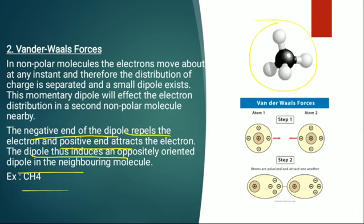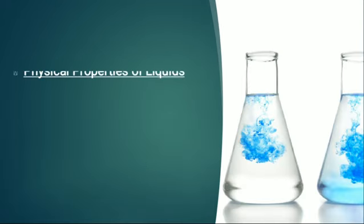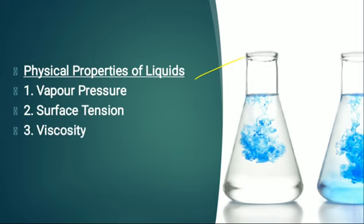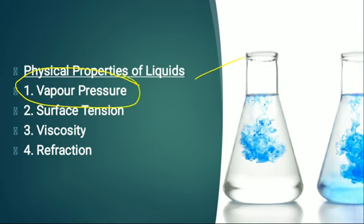Next, the physical properties of liquids can be classified into mainly four types: the first one is vapor pressure, the second is surface tension, the third is viscosity, and the fourth is refraction or refractive index. In this video I am only discussing vapor pressure.